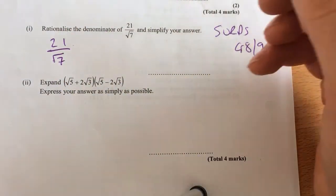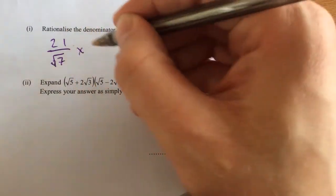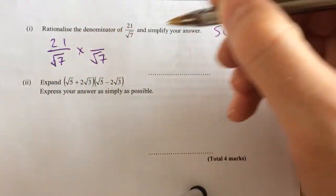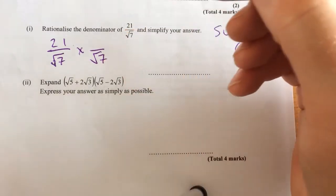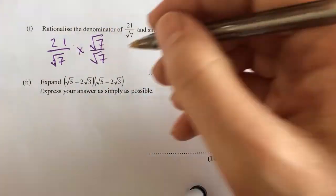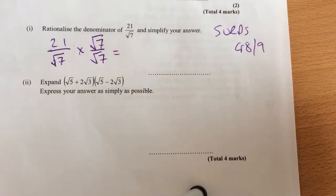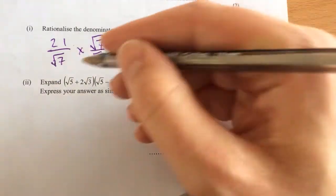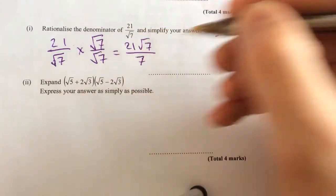So you have to times the denominator by root 7 to rationalize it to make 7. So times the denominator by root 7, and the same with the numerator. Okay, because that is in effect 1. Okay, and then what does that become? 21 root 7 over 7, because root 7 times root 7 is 7.